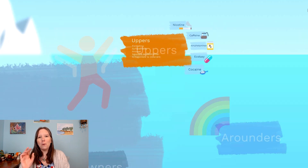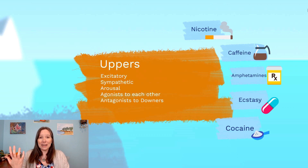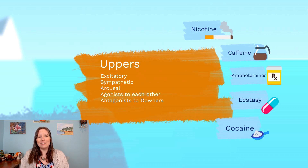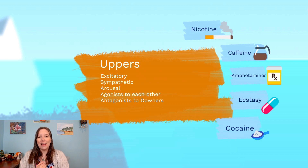When we talk about uppers, we're talking about types of drugs that, amongst their many effects, excite us. They provide more activity in the brain by eliciting more activity in our excitatory neurotransmitters. They arouse our sympathetic nervous system and create heightened levels of alertness and arousal. Because all uppers have this effect, taking combinations of uppers can make them agonists of each other, heightening that effect.